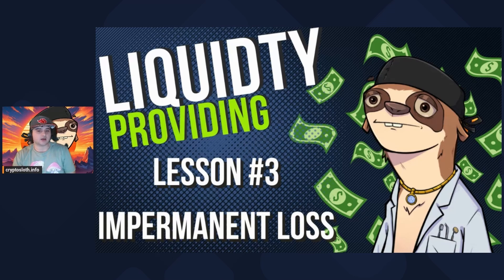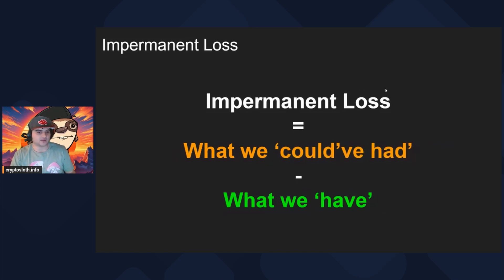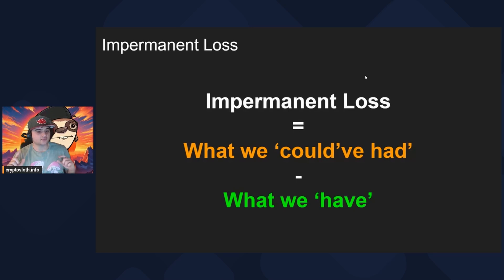To start off the lesson, let's talk about what impermanent loss is. The formula is: your hodl bag at the post-trade value minus the post-trade value. It's a complicated way of saying what we could have had minus what we have — the difference between the value of your tokens if you just held them after a price move, versus what you have after the price happens when you're providing liquidity.